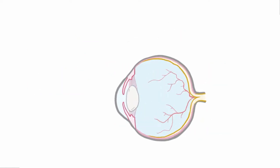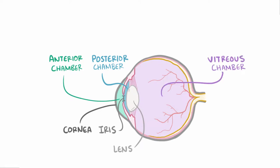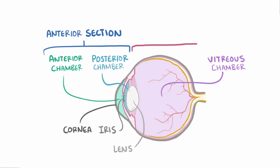Taking a closer look at this cross-section of the eye, you can see that it's split up into different chambers. The anterior chamber includes the area from the cornea to the iris, the posterior chamber is this really narrow space between the iris and the lens, and then this larger vitreous chamber includes the space between the lens and the back of the eye. Both the anterior and posterior chambers are located within the anterior section of the eye, while the vitreous chamber is part of the posterior section of the eye.